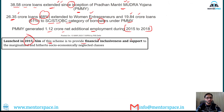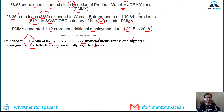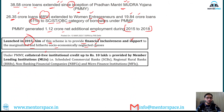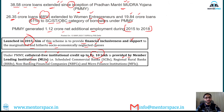This scheme was launched in 2015, and its aim was to provide financial inclusiveness and support to marginalized and socioeconomically neglected classes such as SC, ST, and women. Under the scheme, collateral-free institutional credit of up to Rs. 10 lakh is provided by member lending institutions, which include scheduled commercial banks, regional rural banks, non-banking financial companies (NBFCs), and microfinance institutions.